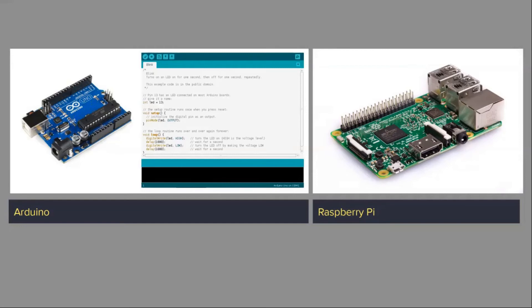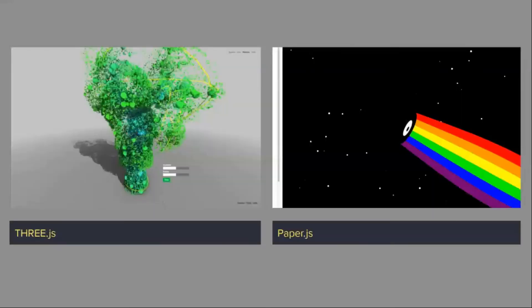Arduino was very well received because it allowed beginners and non-technical people to get introduced and start working with sensors in physical space in a very accessible, non-technical way. Three.js and Paper.js are frameworks for online graphics on the web — three.js for 3D and Paper.js for 2D.